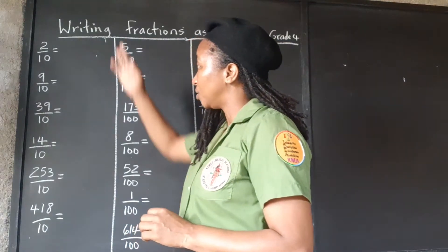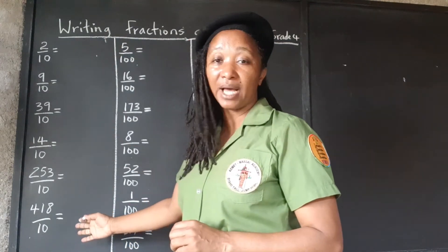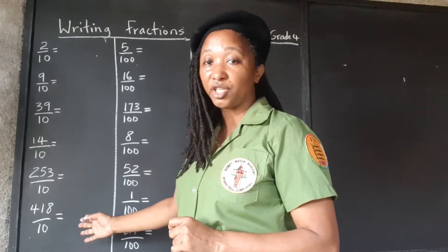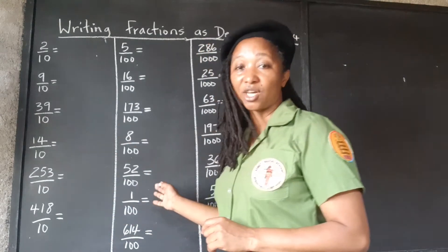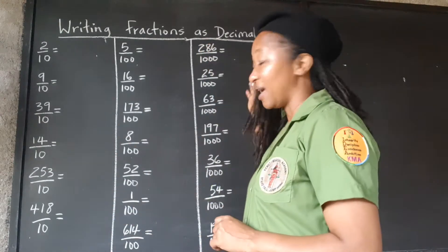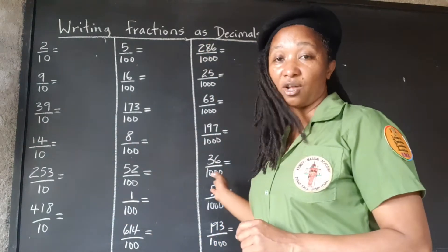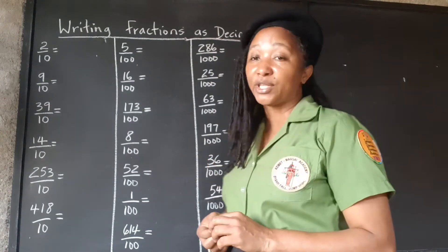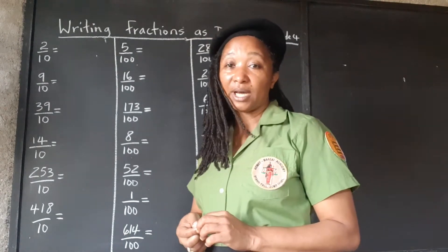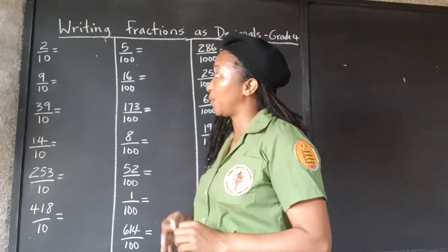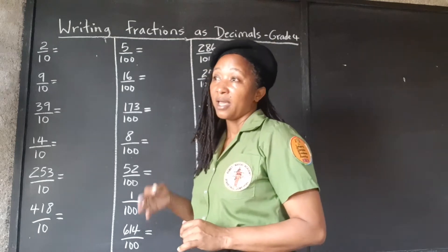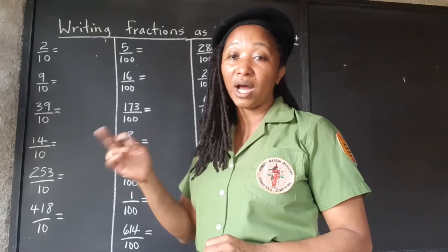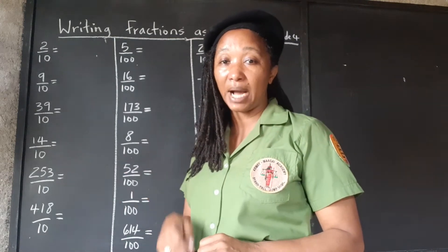Everything in this column has 10 in the denominator, everything in this column has 100, and everything in this column has 1,000. So remember, if 10 is in the denominator, we're going to move one place back — one place to the left.